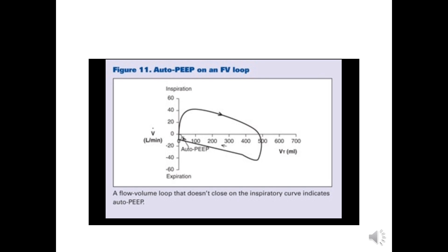Here the flow-volume loop shows auto-PEEP or air trapping. The expiratory limb does not reach back to baseline — the loop does not completely close — depicting auto-PEEP.